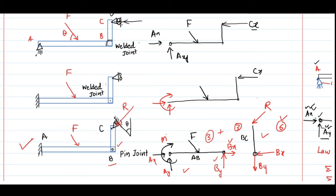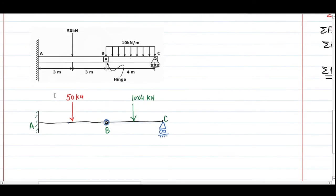Now let's solve the GATE 2020 exam problem. The problem has a uniformly distributed load, a point load, a fixed joint, a pin joint, and a roller joint. In the line diagram, the uniformly distributed load is replaced by an equivalent point load: 10 × 4 = 40 kN, placed at the center of the UDL span between points B and C.